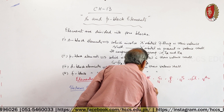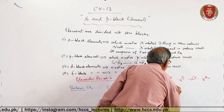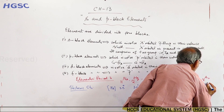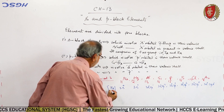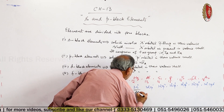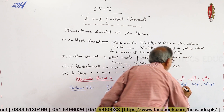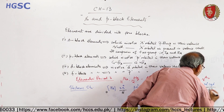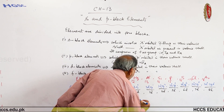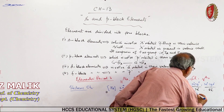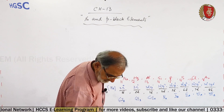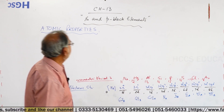If we consider the electronic structure, using neon as the core, the configurations are: [Ne]3s1, [Ne]3s2, [Ne]3s2 3p1, [Ne]3s2 3p2, [Ne]3s2 3p3, [Ne]3s2 3p4, [Ne]3s2 3p5, and [Ne]3s2 3p6. These belong to groups 1A, 2A, 3A, 4A, 5A, 6A, 7A, and 8A respectively.